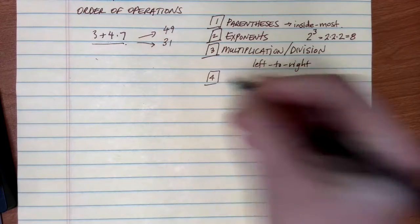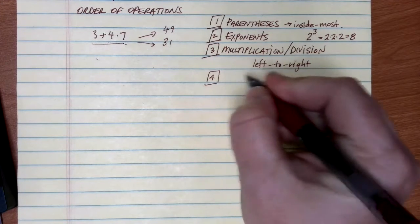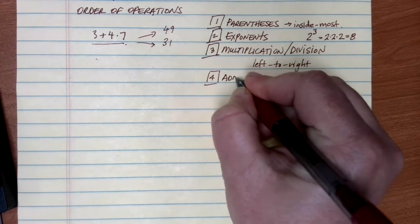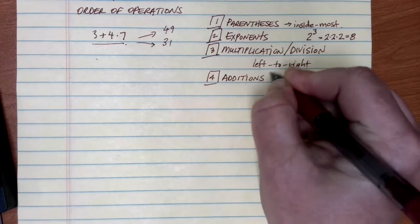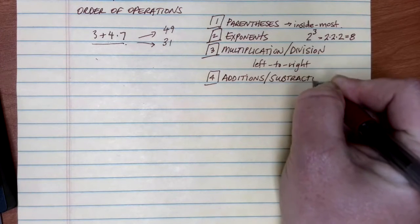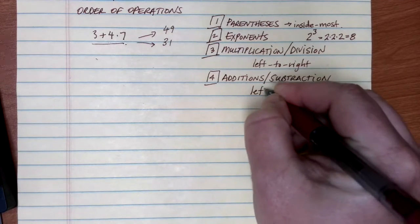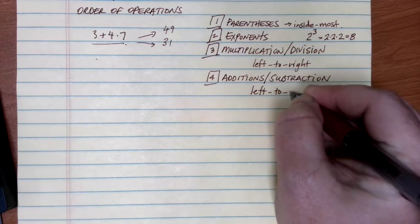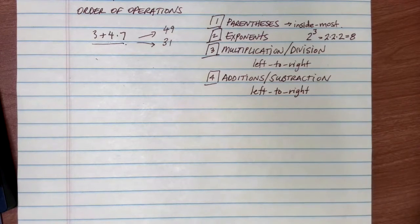Then, once you've taken care of all multiplications and divisions, the last thing you want to do is any additions and subtractions. Addition and subtraction have equal priority. When deciding the order, we do them from left to right — either addition or subtraction, whatever comes first as we look from left to right in the problem.